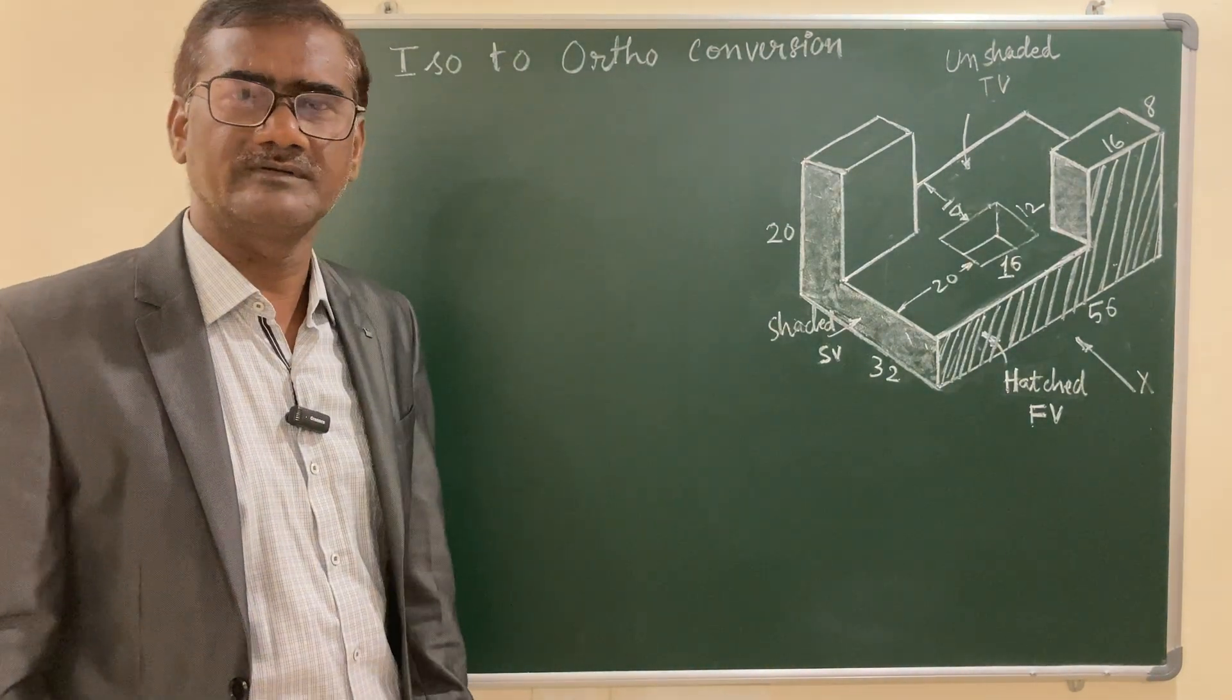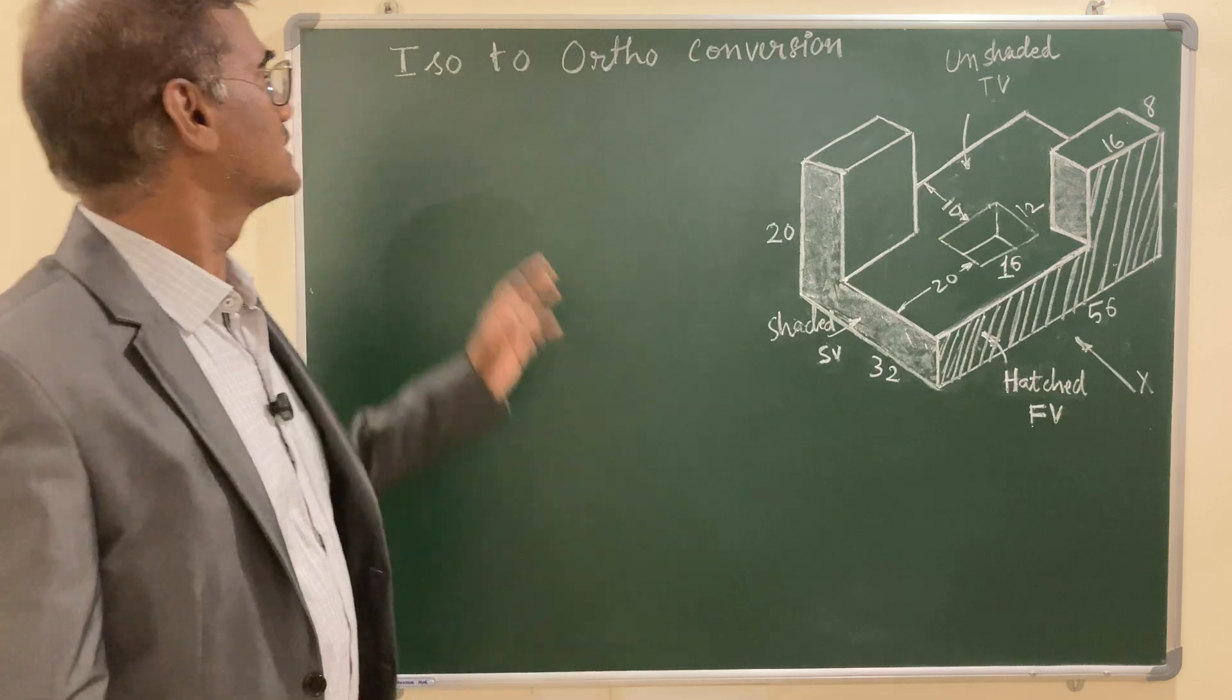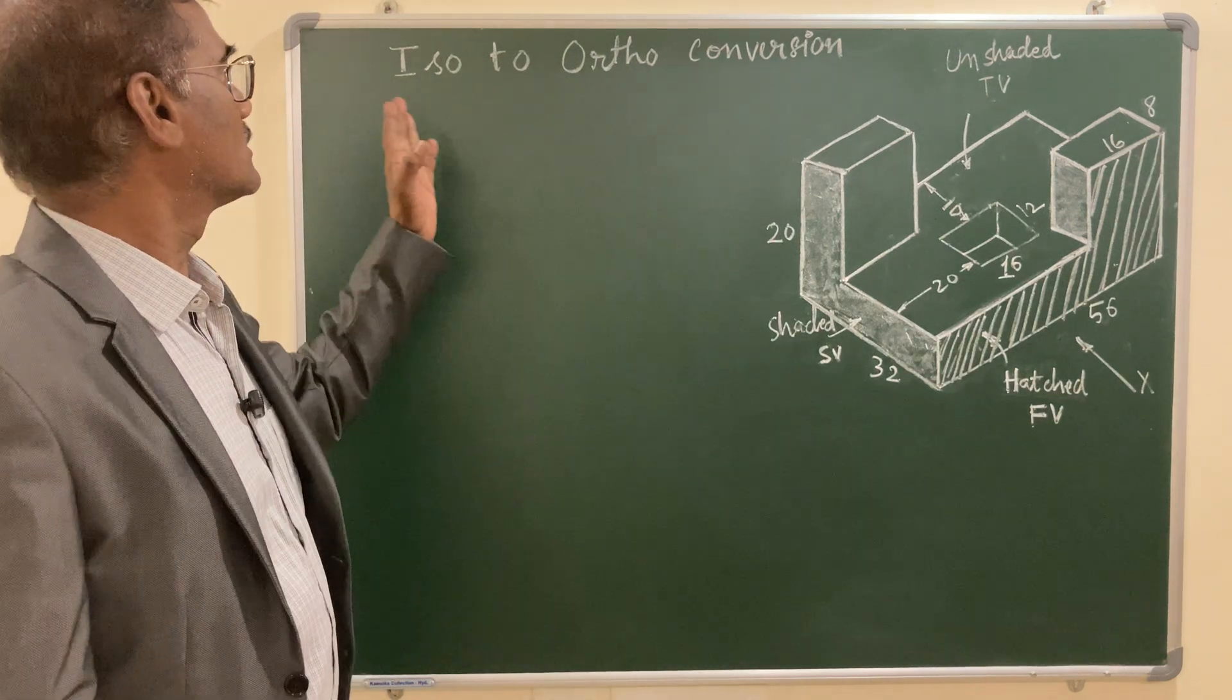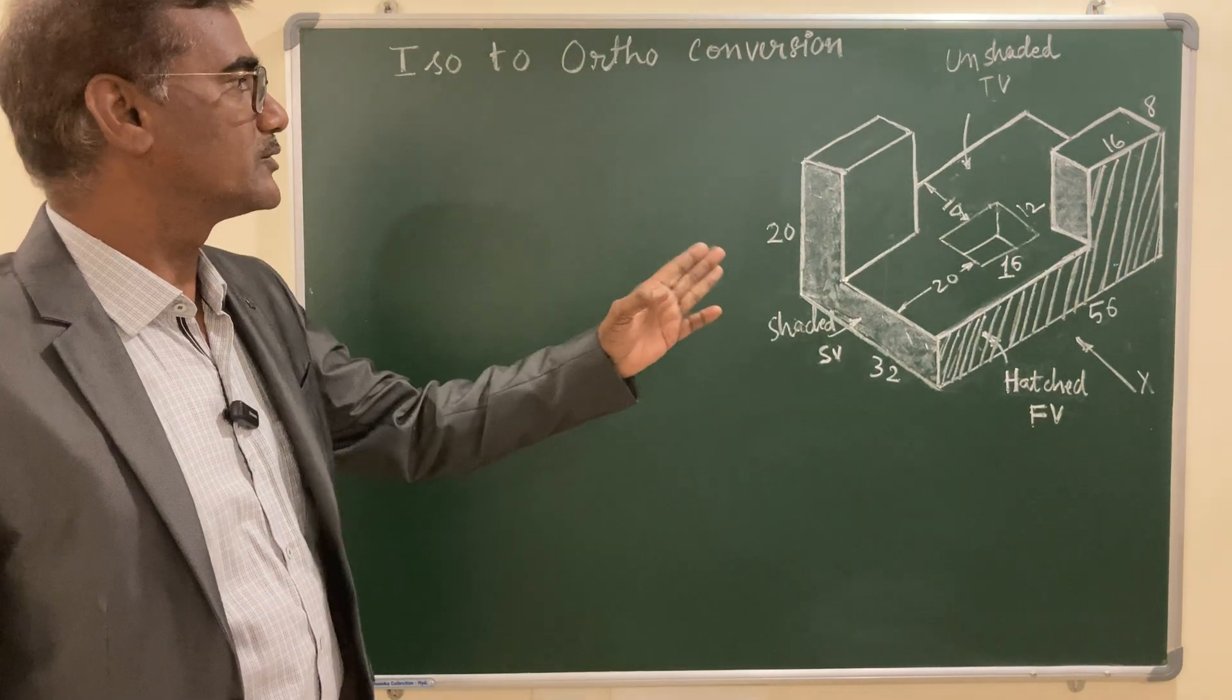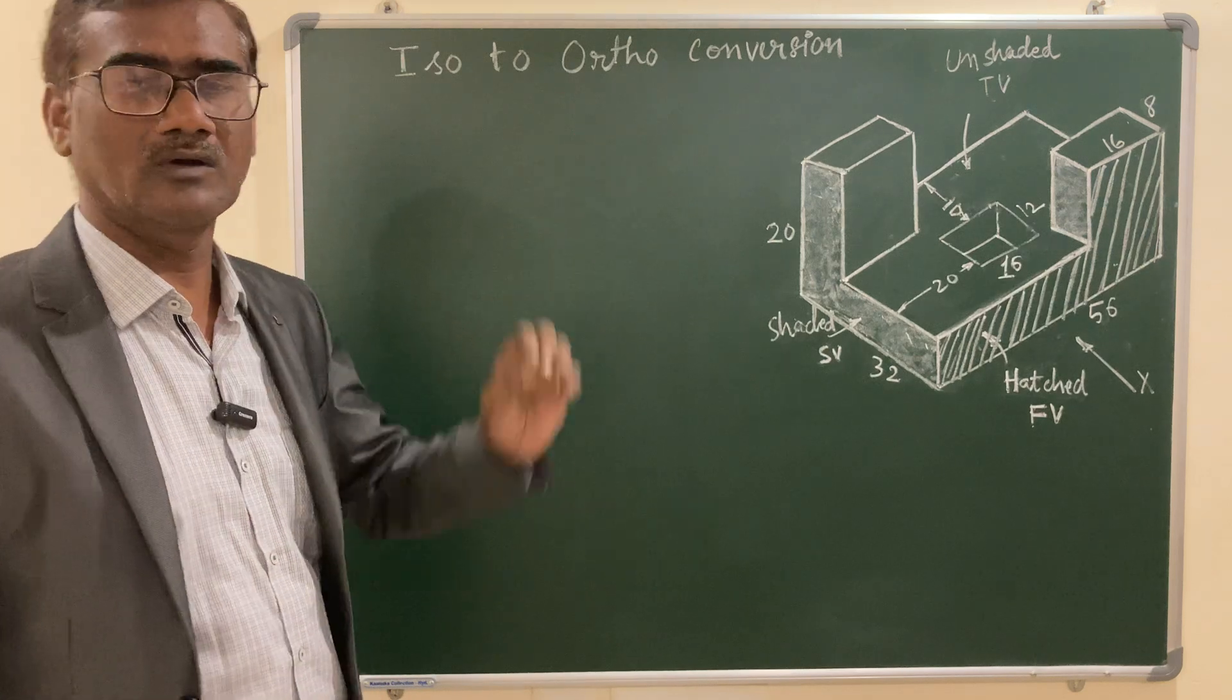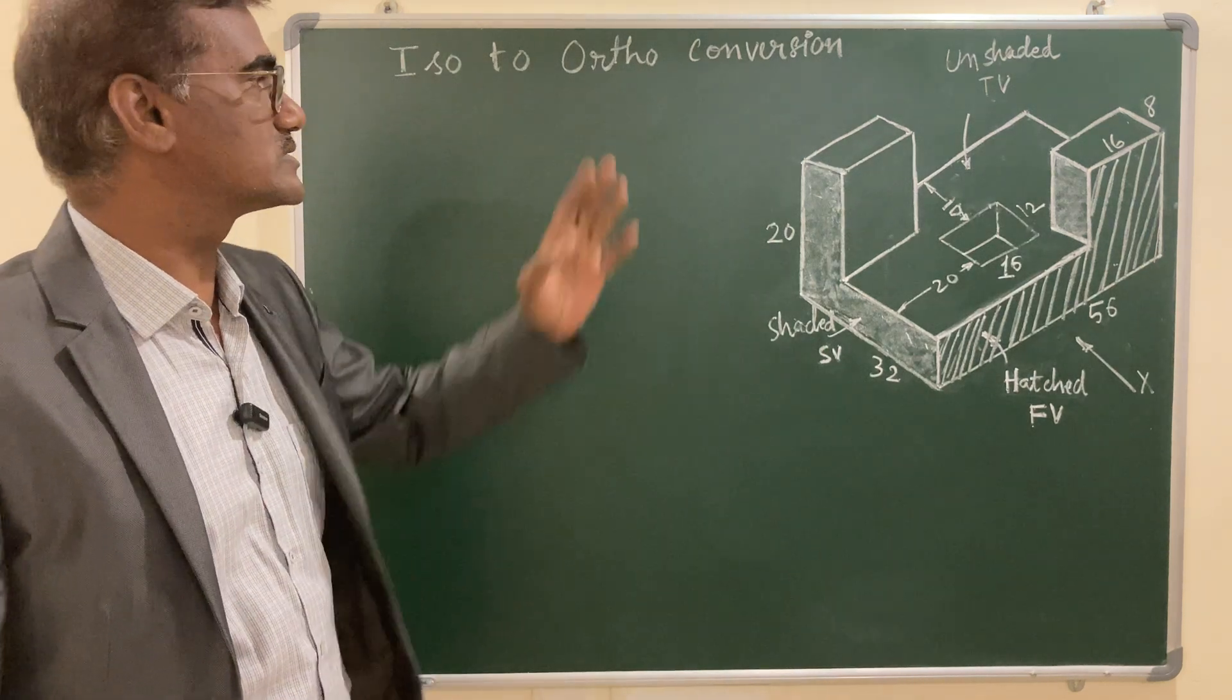Hello everyone, welcome to Ravi's Academy. Today we will be discussing how to convert a pictorial view, that is isometric view, to orthographic view. This process is known as conversions.